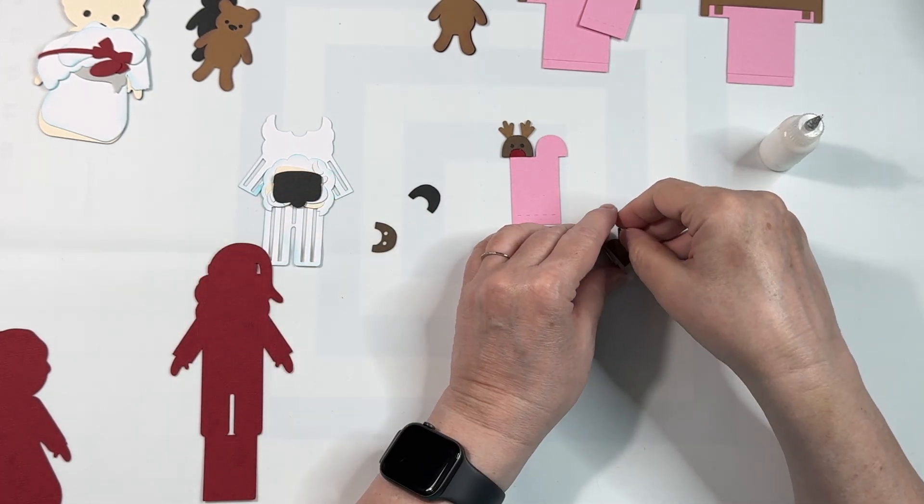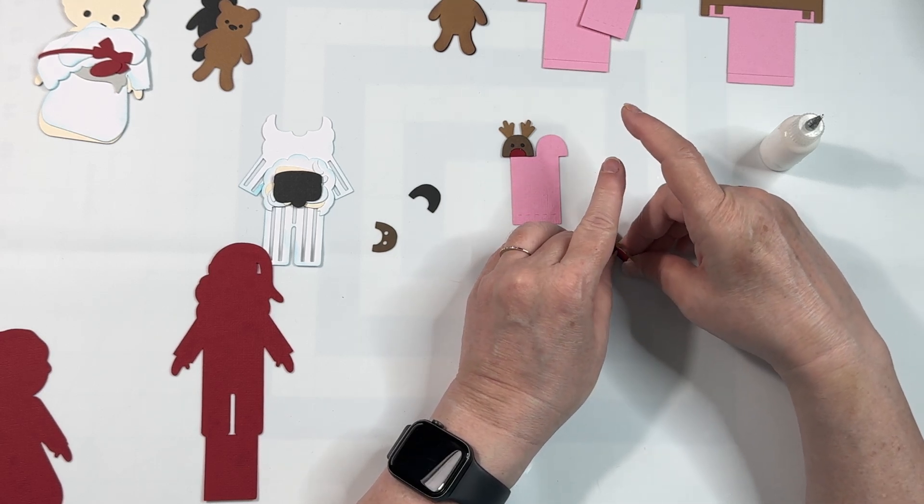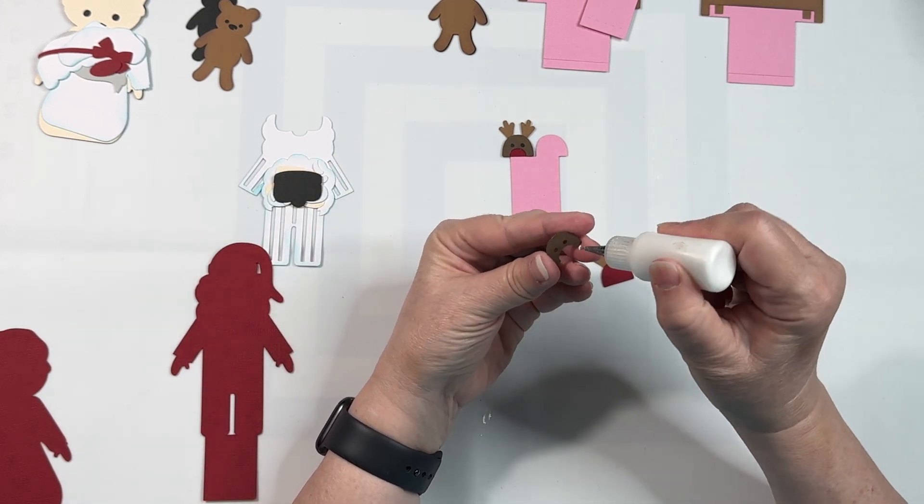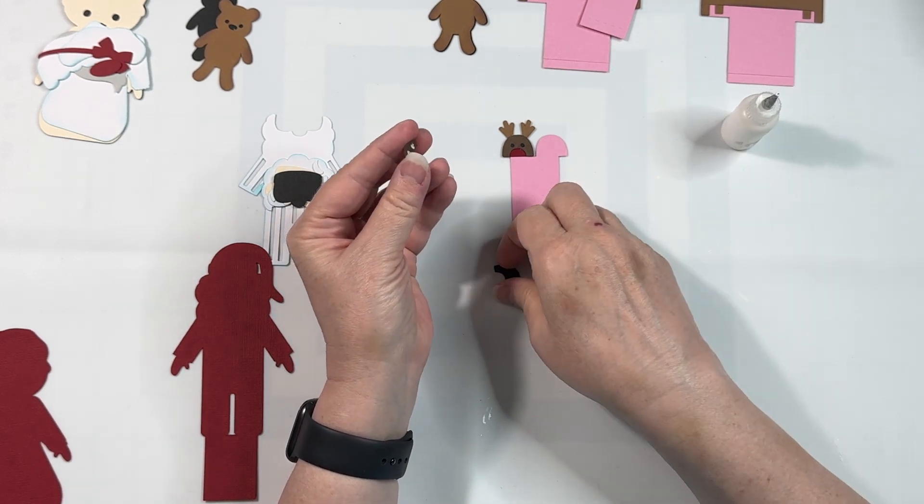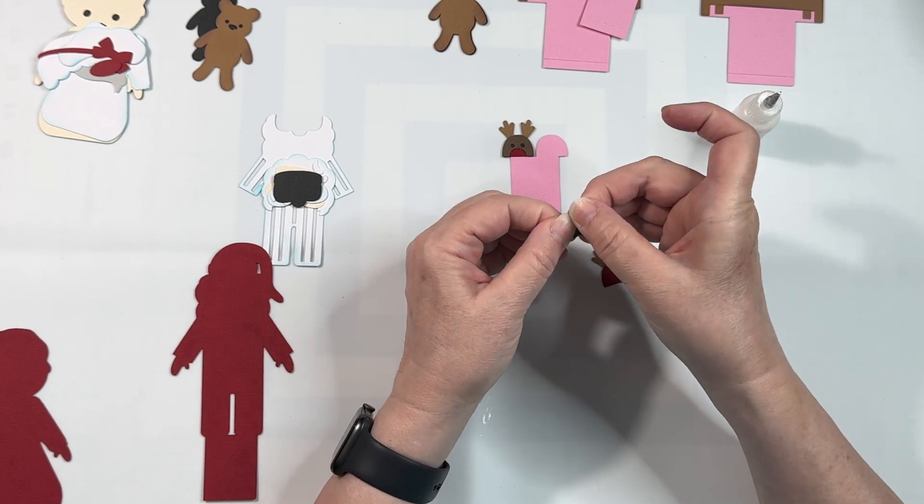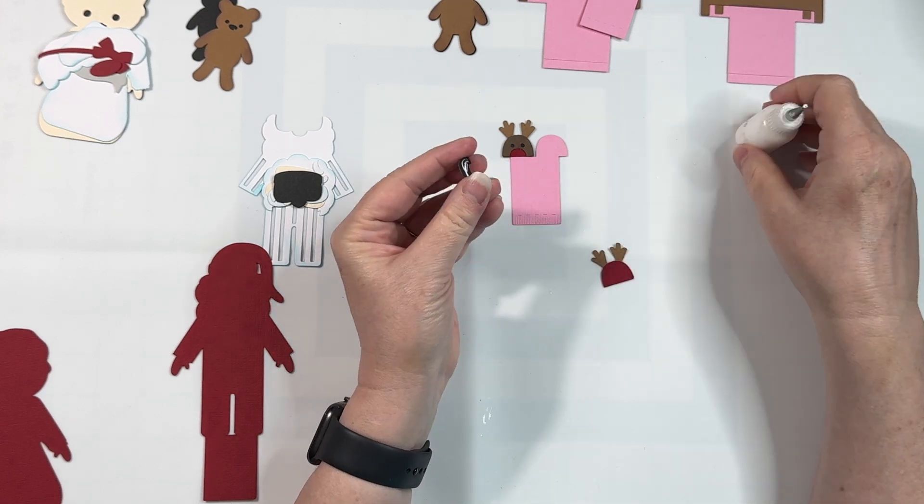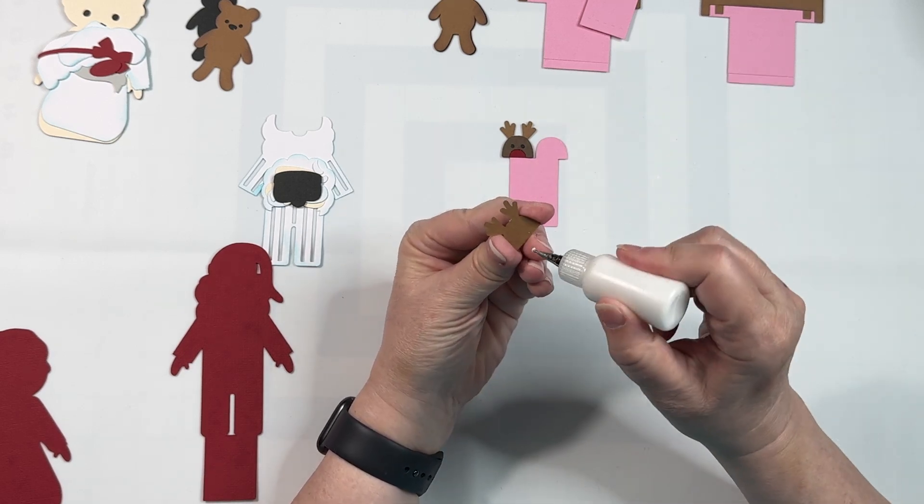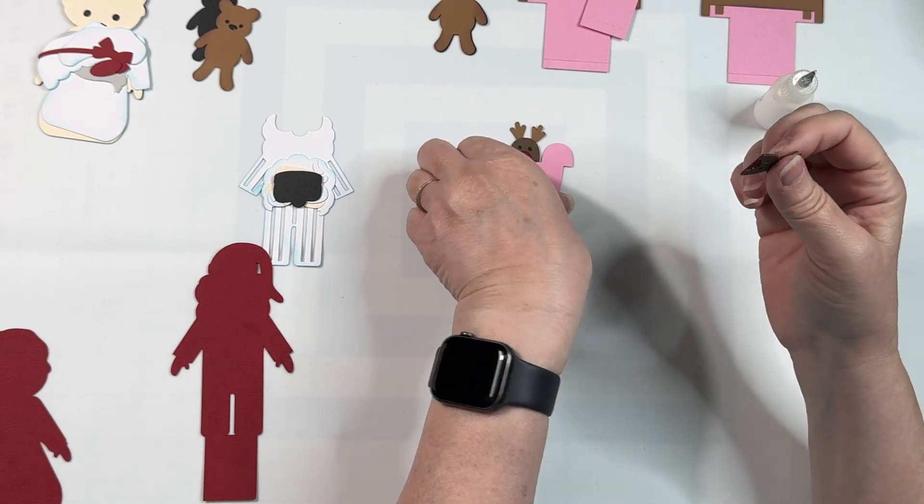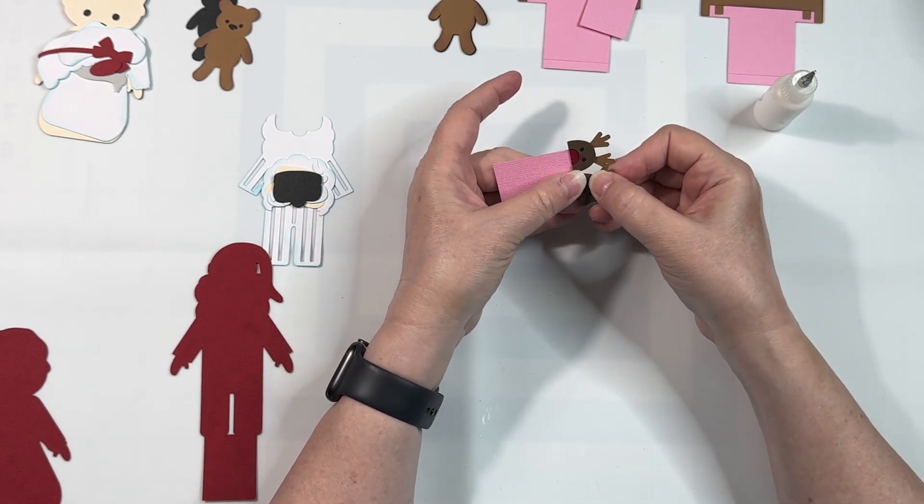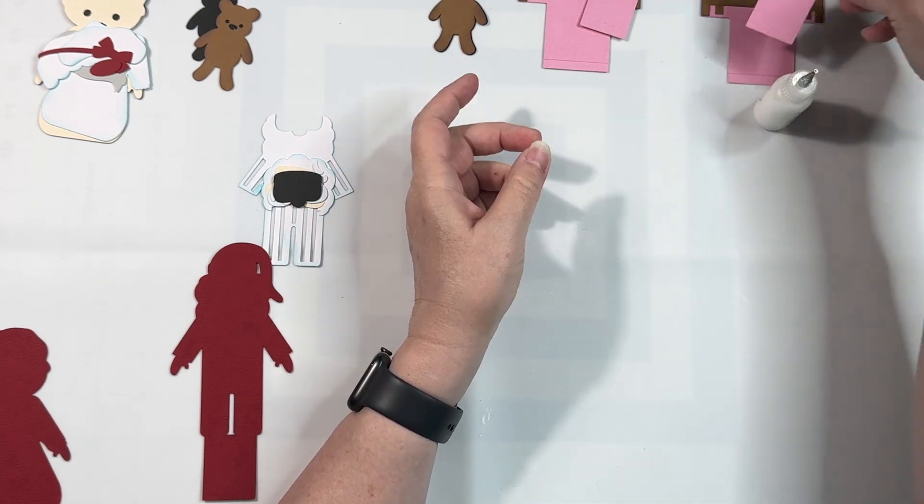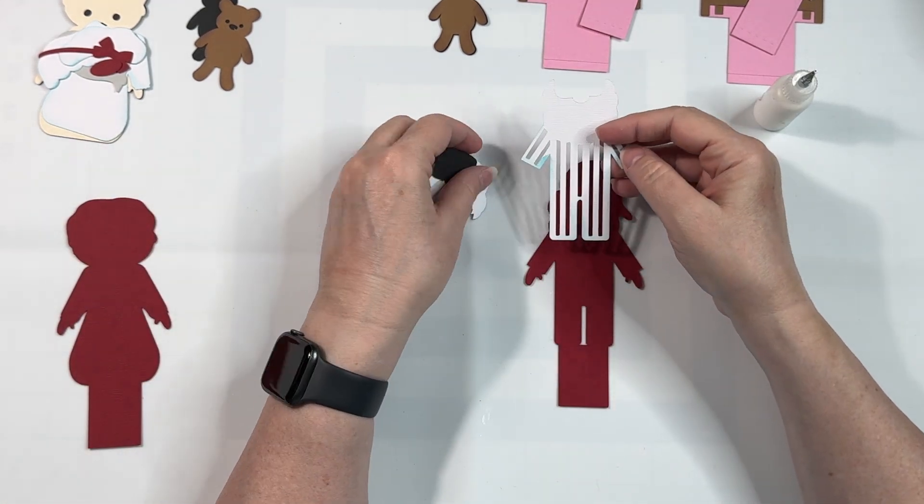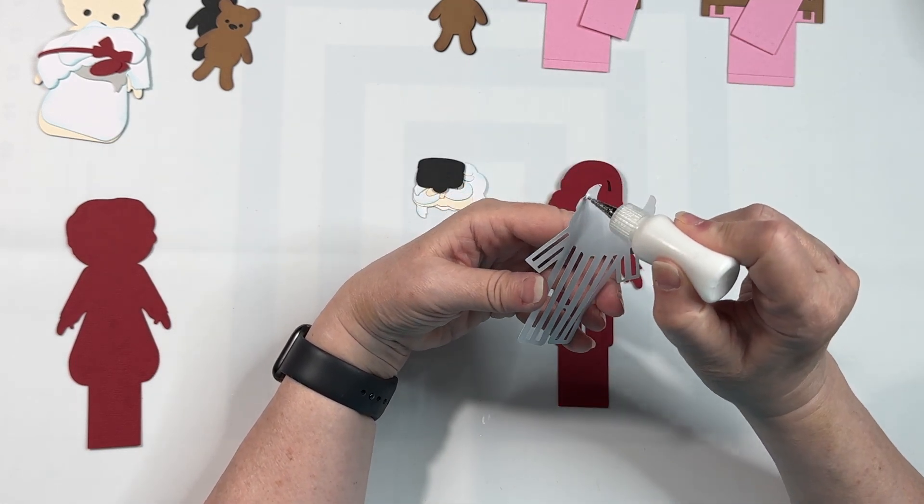And these are going to glue right to the base. So several steps, but it's not difficult. And then again, we're going to glue that right to the base. So we have the front and the back insert done. And now we can do our Santa and Mrs. Claus.